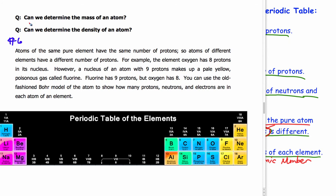We're looking at two questions that we've been thinking about all the way through this reading so far. Can we determine the mass of an atom, and can we determine the density of an atom, or maybe more accurately, does the density of an atom affect the density of a substance?